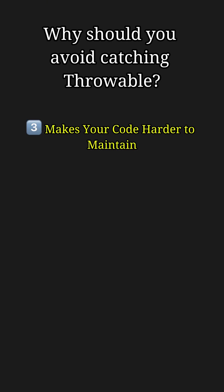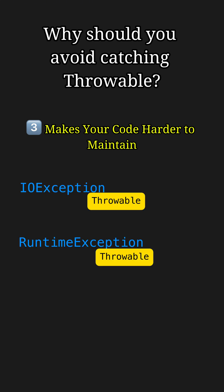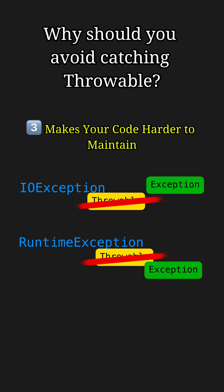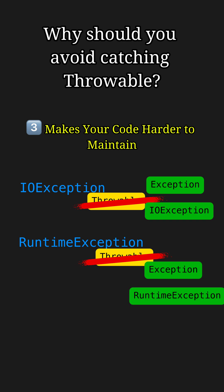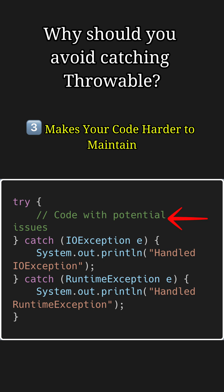The final reason is that catching Throwable makes your code harder to maintain because it breaks the principle of catching specific exceptions. If you need to handle specific errors, catching Exception or more granular exceptions like IOException or RuntimeException makes your code cleaner and easier to maintain. For example, here this code throws IOException as well as RuntimeException, but catching them specifically improves code readability and maintainability.